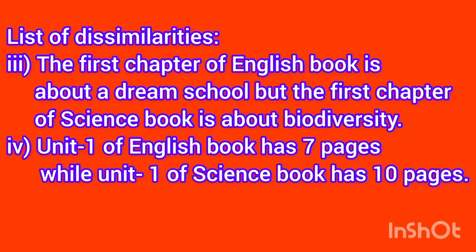The first chapter of the English book is about a dream school, but the first chapter of the Science book is about biodiversity. Additionally, Unit 1 of the English book has 7 pages, while Unit 1 of the Science book has 10 pages.